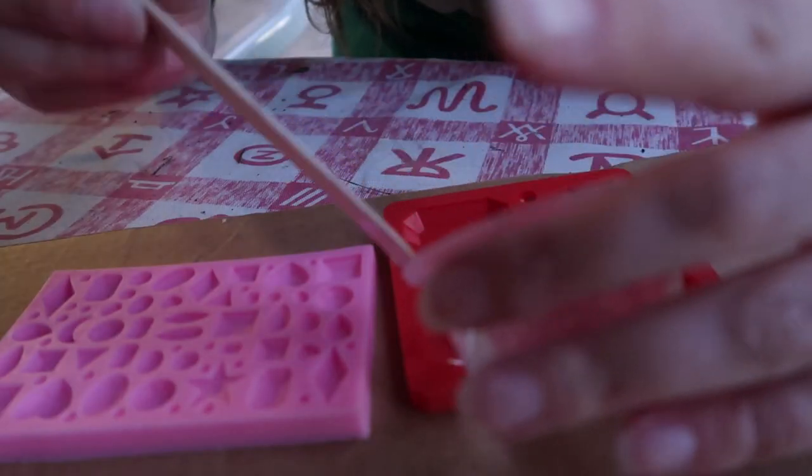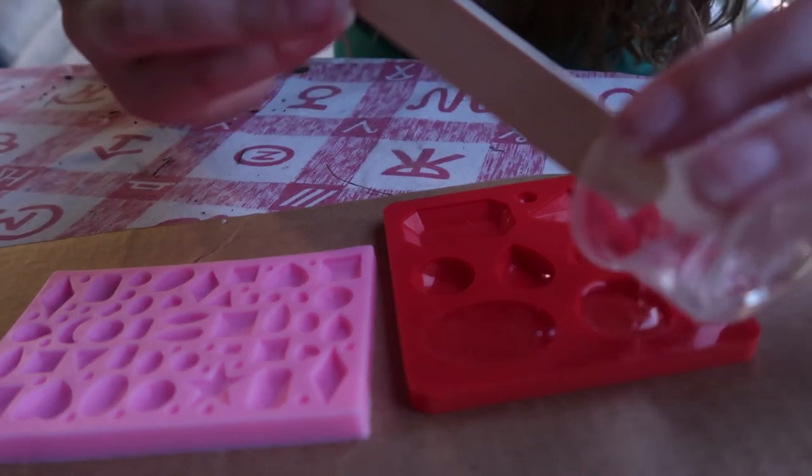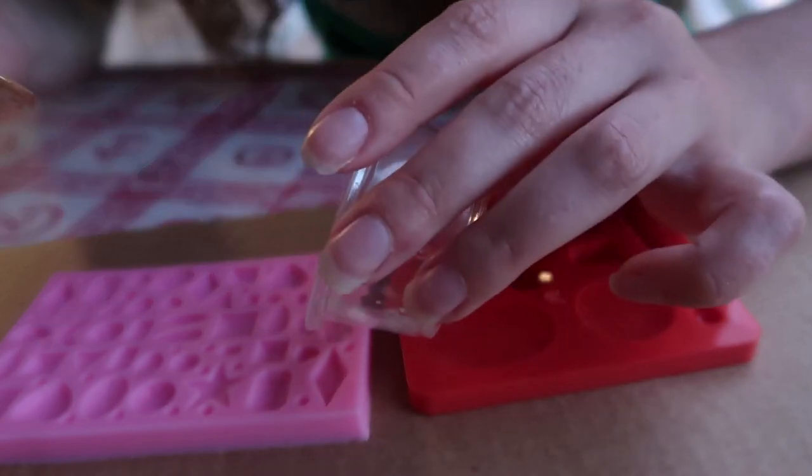When your resin is mixed, you can carefully pour it into your molds. Since you mixed your resin, there will be a lot of air bubbles in it and you don't want bubbly gems. So to get out the bubbles, let the mold sit for about 15 minutes.